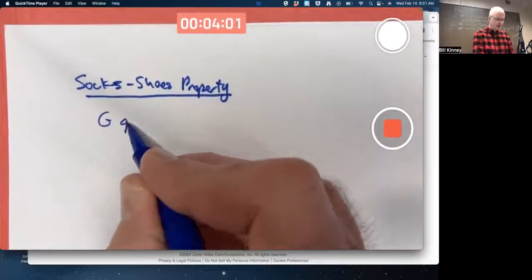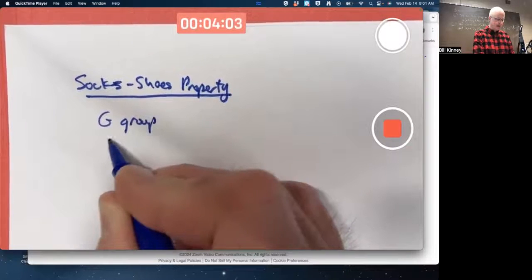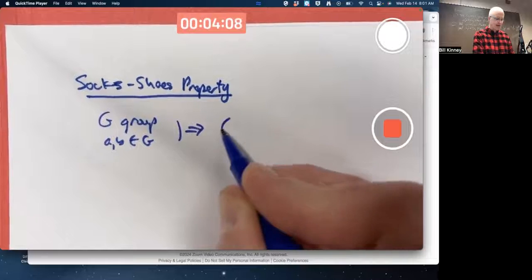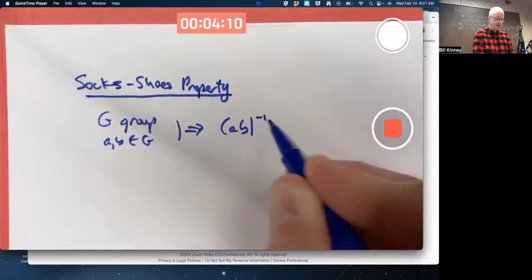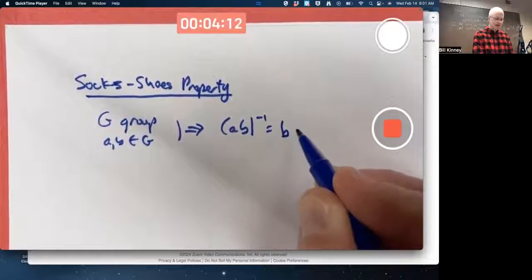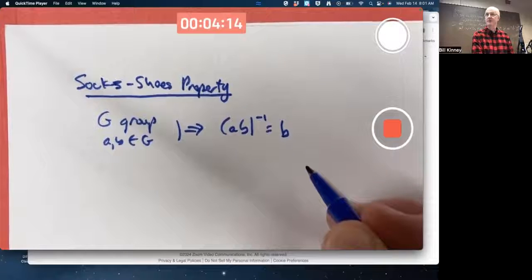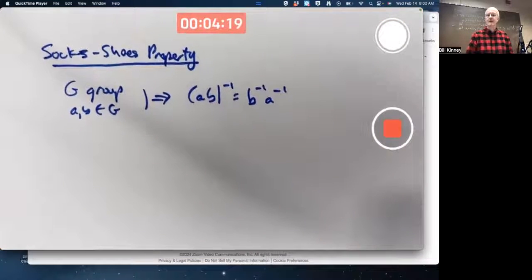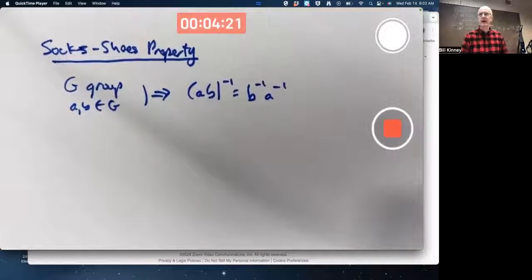G is a group. A and B are elements of the group. We're trying to show that the inverse of the product, A times B, is the product of their inverses, but in reverse order. This is always true. G can be any group.